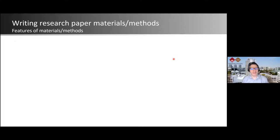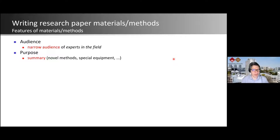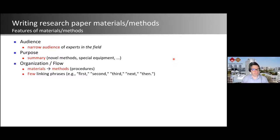What are the features of materials and methods? The audience is quite narrow — people who want to replicate the study, not general readers who just want the results. The purpose is usually to summarize the method, not to describe everything in full replication detail.